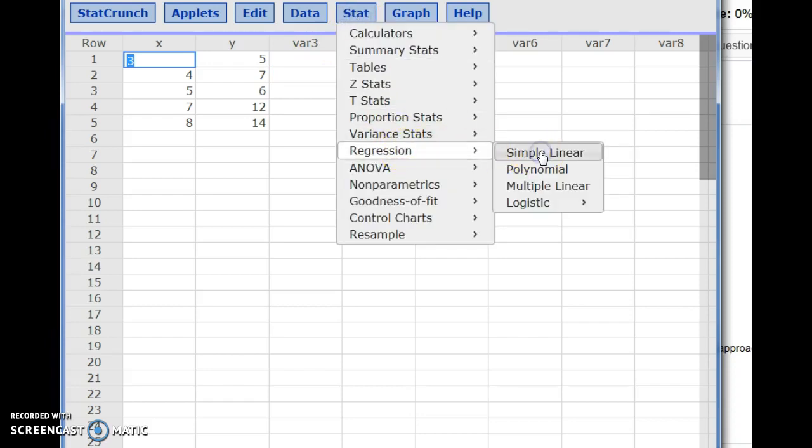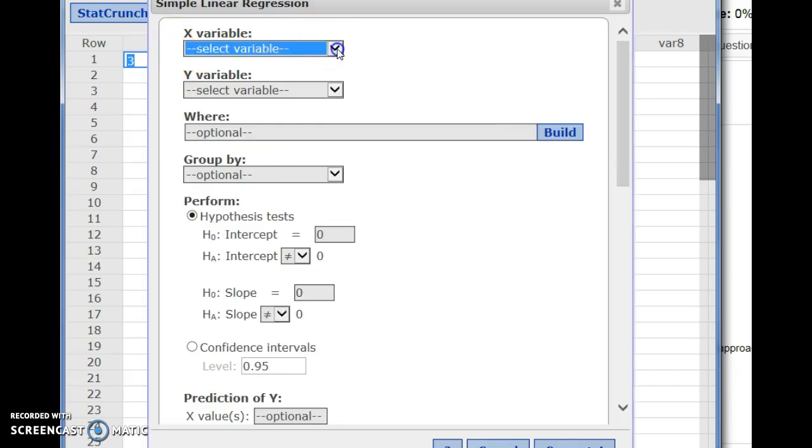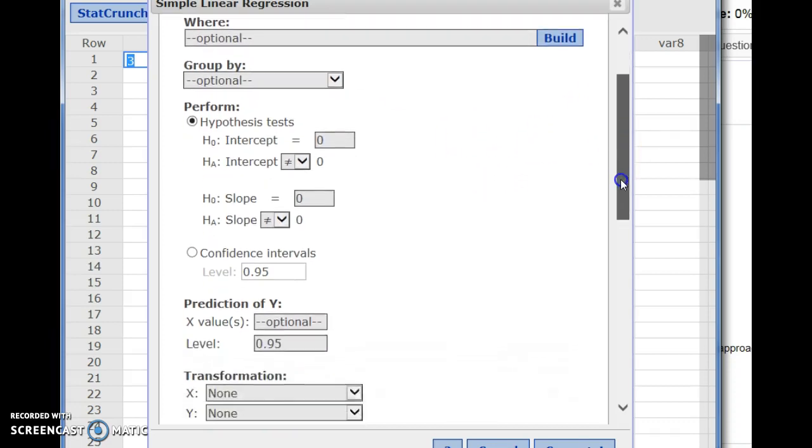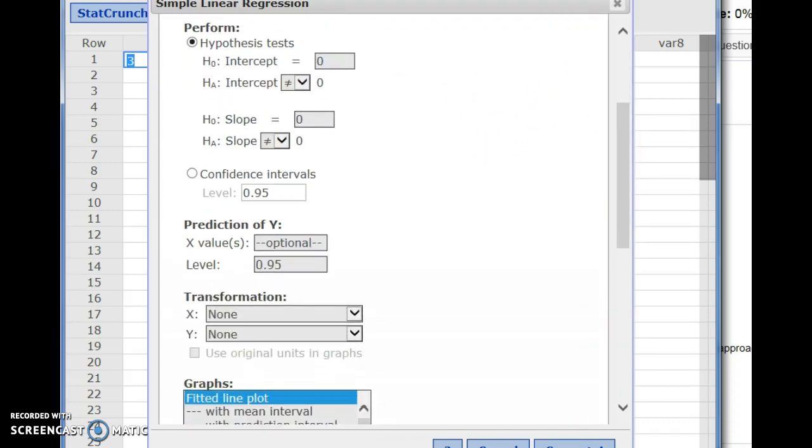Simple Linear, because we just have one explanatory variable x. Our y variable is called y. Let's hit Compute now.